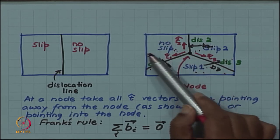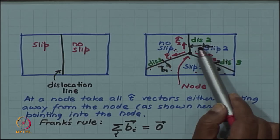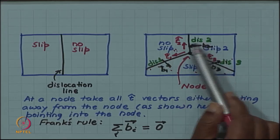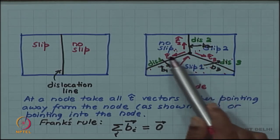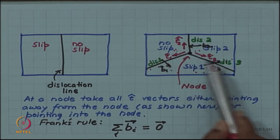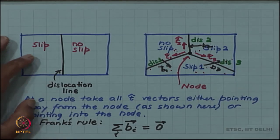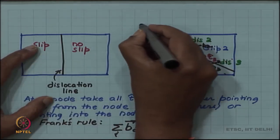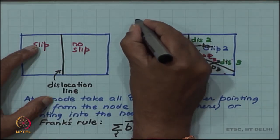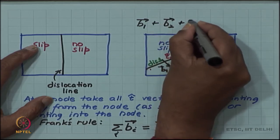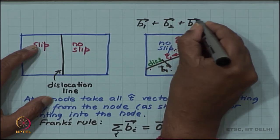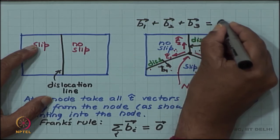But since I am back to the original the sum of all these three should total to no slip because finally I am in a no slip region. So the sum of B1 plus B2 plus B3 in this case should be 0. In this case B1 plus B2 plus B3 should be 0.